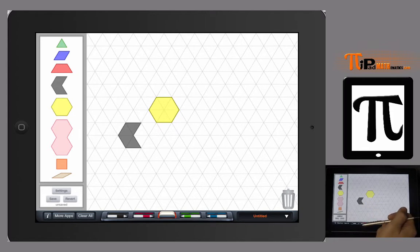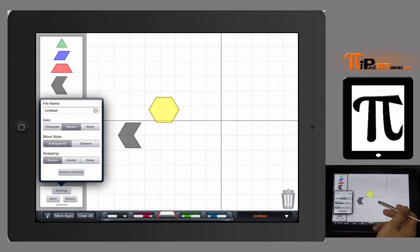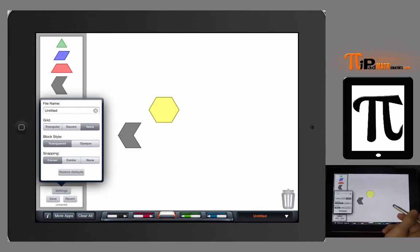You can go to the settings at the bottom left and change the grid. Here's the triangular hexagonal grid. You can change it to a square grid, coordinate plane, or take the grid off totally. I like working without the grid—it helps build and understand the concept behind it.